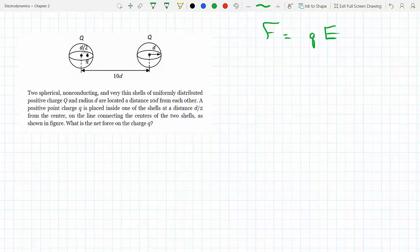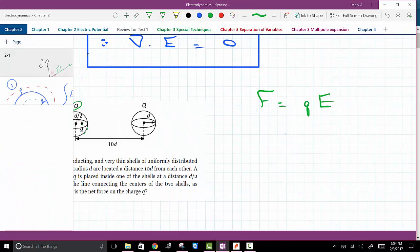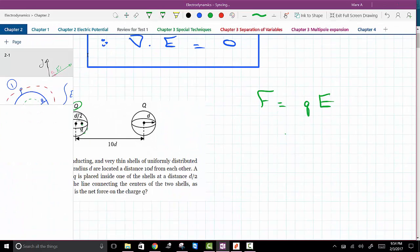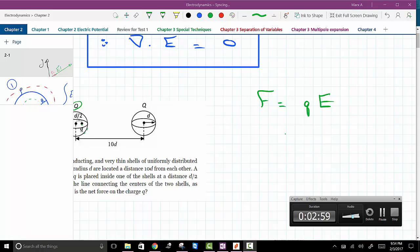Now notice that if you quickly look at the shell on the left and you apply Gauss's law, since this charge Q is actually distributed on the surface, it's not anywhere inside. If you draw a—I don't know why my thing is not working, I apologize, my colors—this is frustrating.